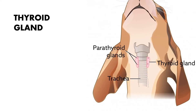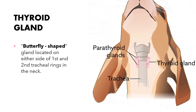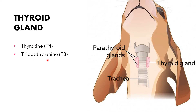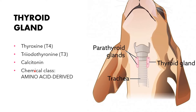The next endocrine gland is the thyroid gland, a butterfly-shaped gland located on either side of the first and second tracheal rings in the neck. The hormones secreted by the thyroid gland include thyroxine (T4), triiodothyronine (T3), and calcitonin. In terms of chemical class, these are classified as modified amino acid or amino acid-derived hormones.